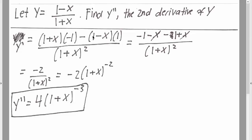So negative x times negative 1 gives plus x, divided by 1 plus x squared. The x cancels and we will be left with negative 1 minus 1, which is negative 2, divided by 1 plus x squared.